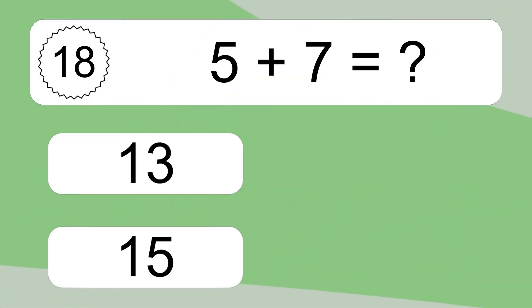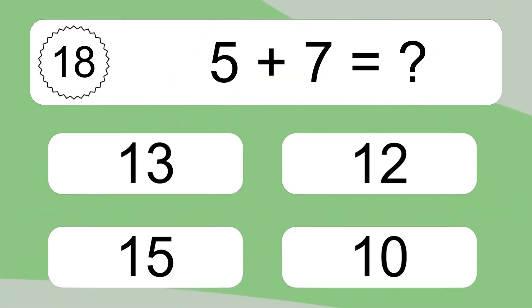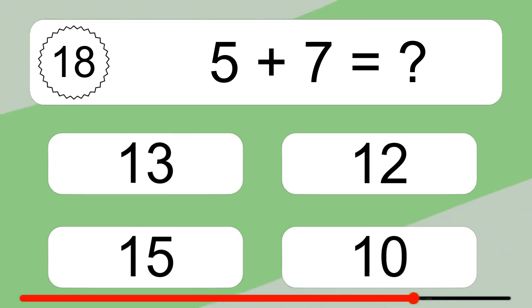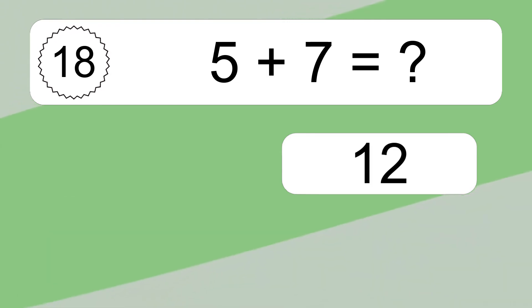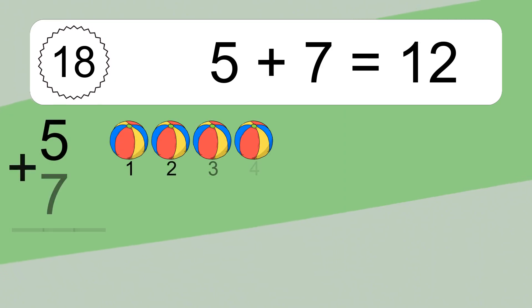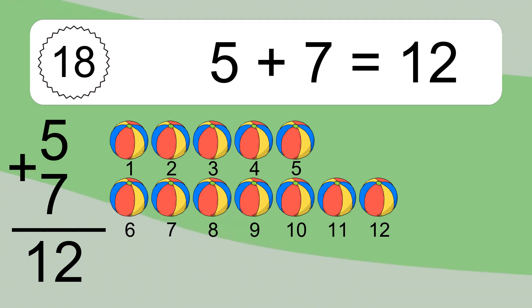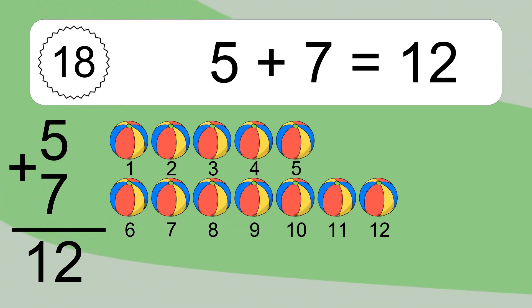5 plus 7 equals what? 5 plus 7 equals 12. Let's count it. 1, 2, 3, 4, 5, 6, 7, 8, 9, 10, 11, 12.